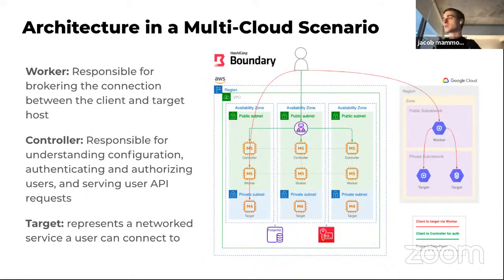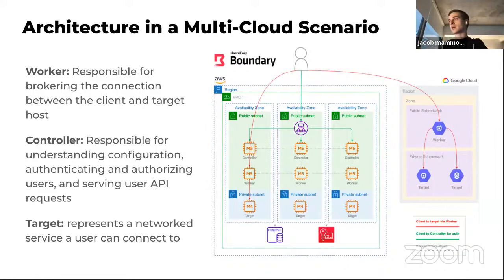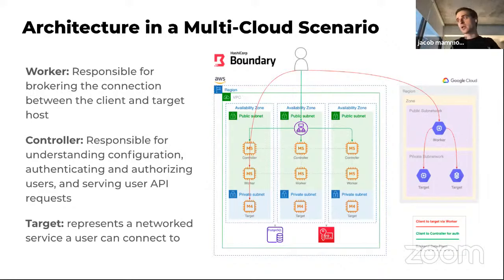The last slide before the demo covers the architecture in a multi-cloud scenario. The reference architecture on the Boundary website is for AWS — I recreated it here and added my GCP snippet, since the demo leverages both clouds. There are three key aspects. First, as a user I connect to Boundary via the Controller, which is responsible for understanding any configuration, authenticating and authorizing users, and serving API requests — it's where users authenticate and see their catalog.